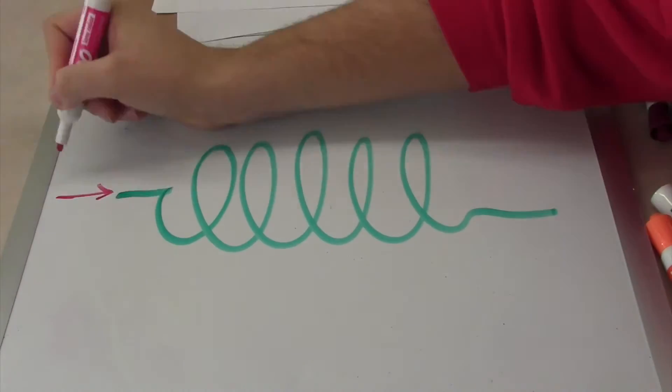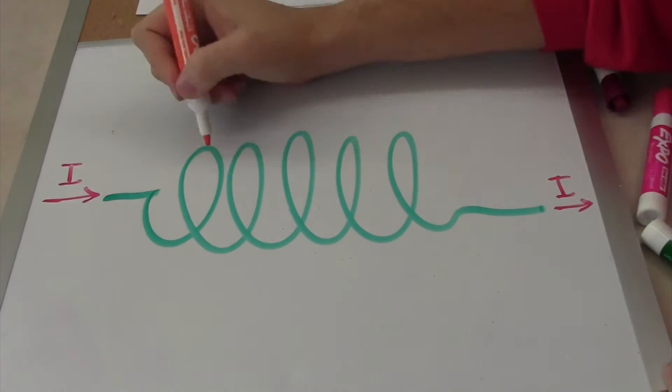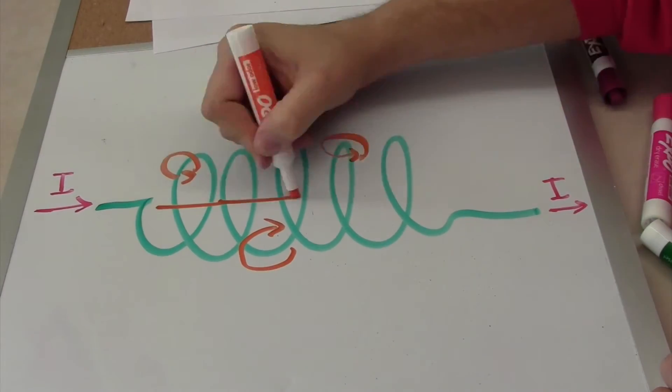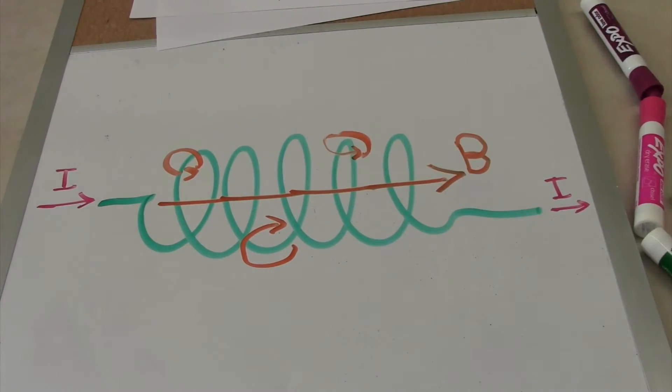What happens when we run a current through a coil of wire? When a current is run through a coil, we observe that the loops of magnetic fields sum together to form a field that goes straight through the center of the coil.